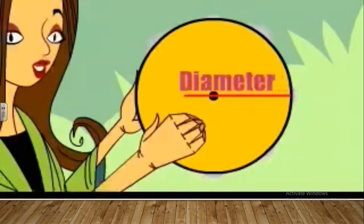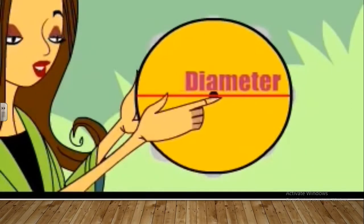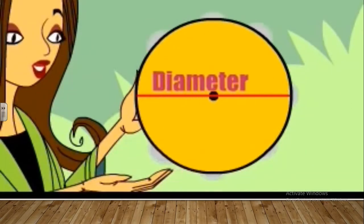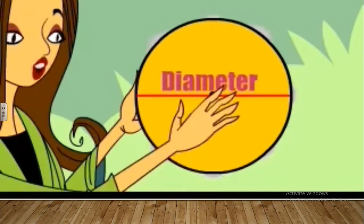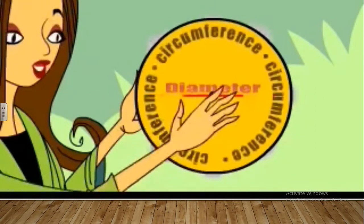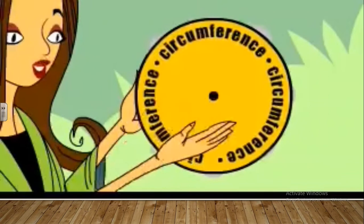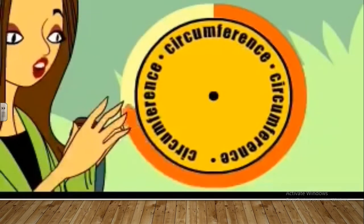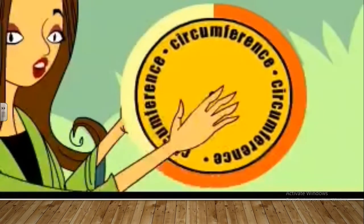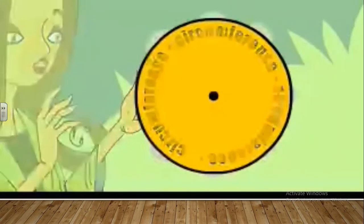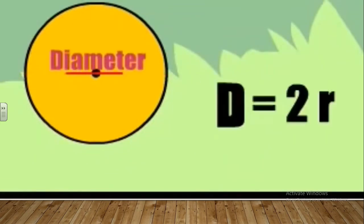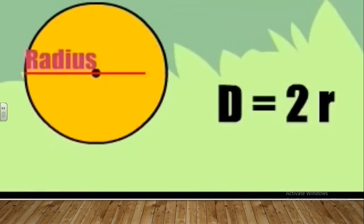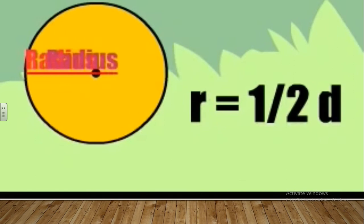A diameter is a line across the endpoints of a circle — it passes through the center point. A circumference is the distance around the circle. The diameter D is twice the radius; the radius R is half the diameter.